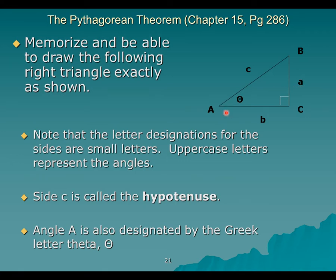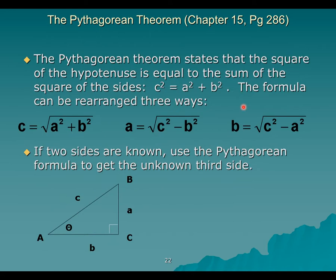Theta can also be angle B. If theta is angle B, then the opposite side will be small b, and small a will be called the adjacent side to theta. So the opposite and adjacent sides are always defined relative to which angle is theta.